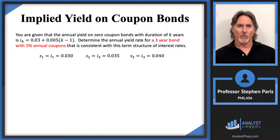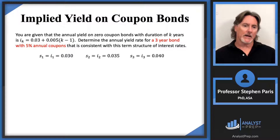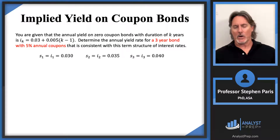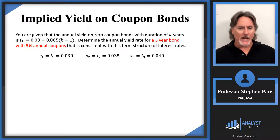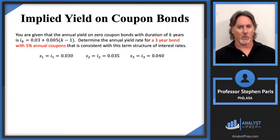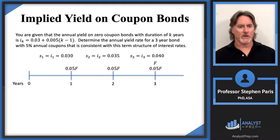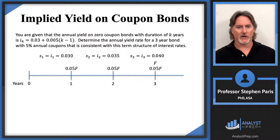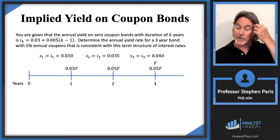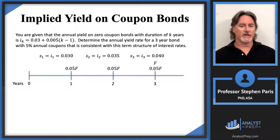Now I'm looking at a coupon bond — one that actually has coupons. It doesn't say anything about the redemption value, so I'll assume it's redeemable at par. It also doesn't state the face value, so let's use a general capital F. The timeline with a 5% annual coupon: after year one, I get a coupon of 0.05F; after years two and three, the same coupon amount. At the end of year three, I get the redemption value, which I'm assuming is the face value F.